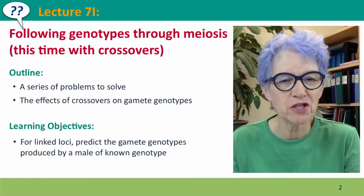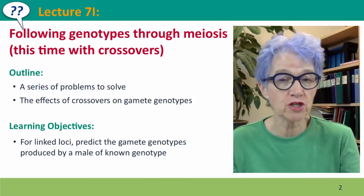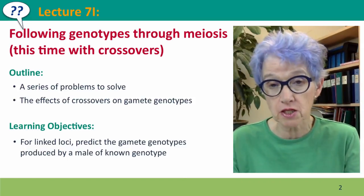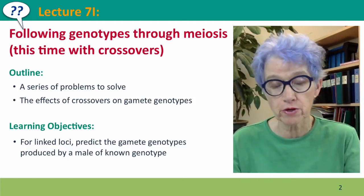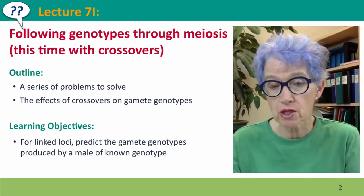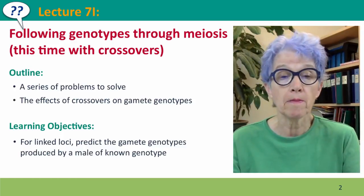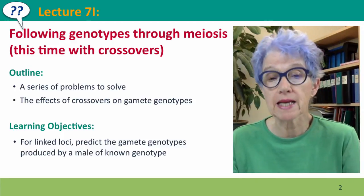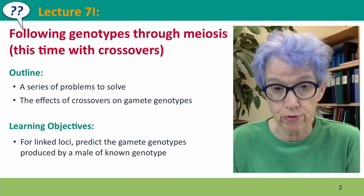Hi, everyone. Welcome back to Useful Genetics. This is Lecture 7i, and in this and the next lecture, we're basically going to spend our time solving problems with meiosis that have crossovers. And what we'll be doing is mainly predicting the gametes that these meiosis will produce.